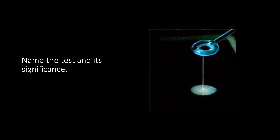The given figure shows the string test, and it is positive. The colonies of Vibrio are mixed with a drop of 0.5% sodium deoxycholate. The suspension becomes mucoid, and when that suspension is lifted with a loop, a string is formed.